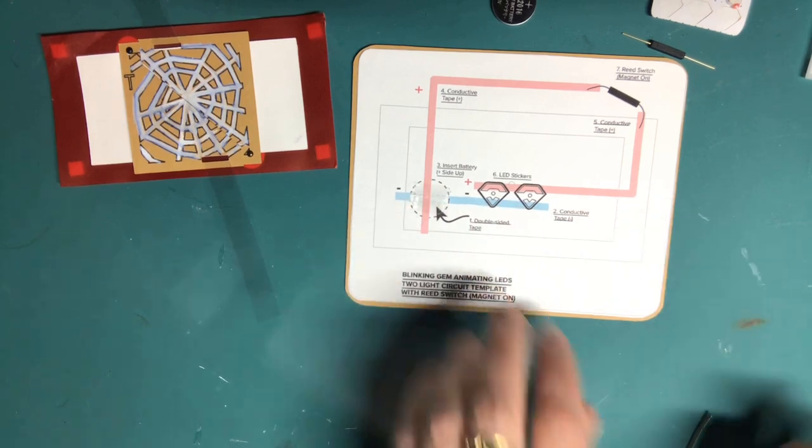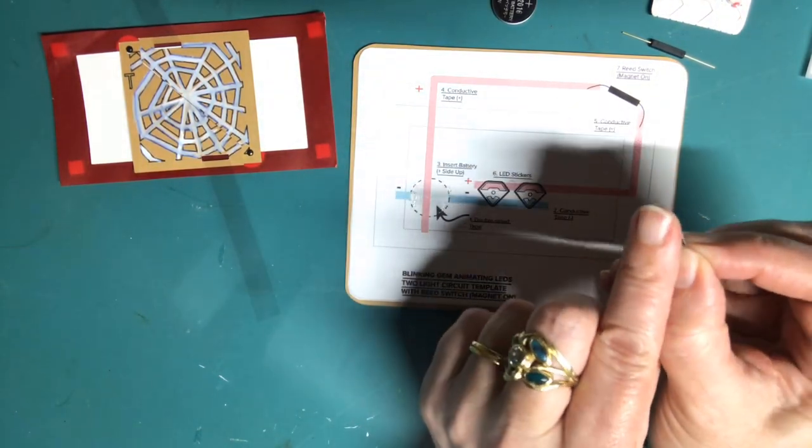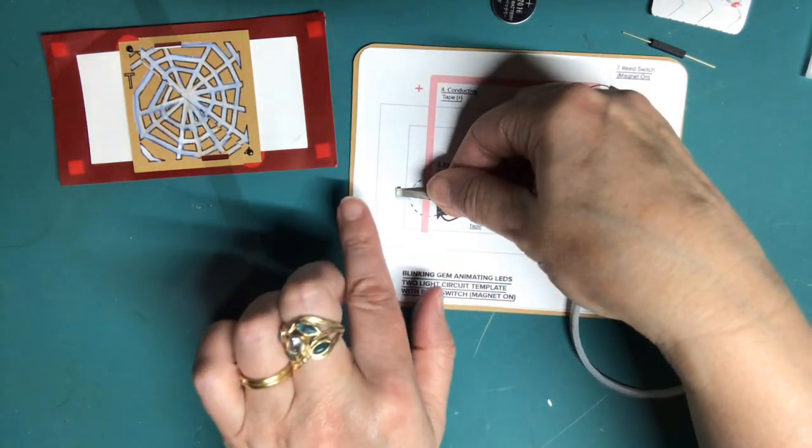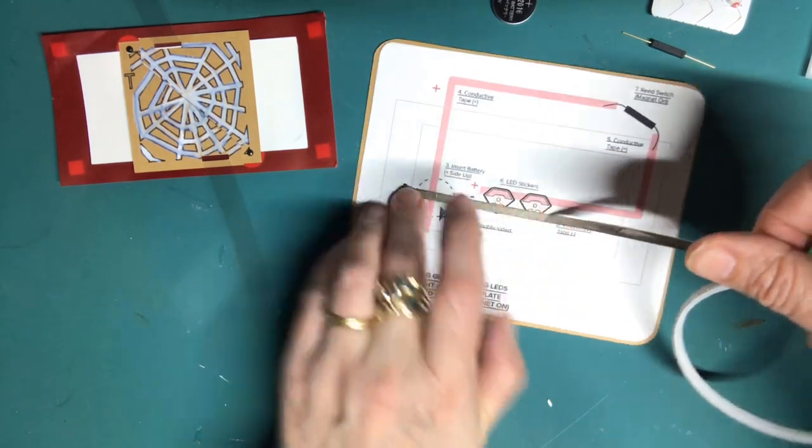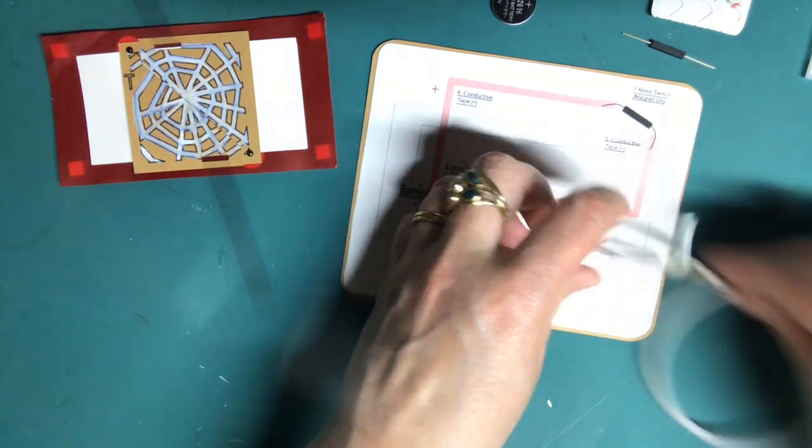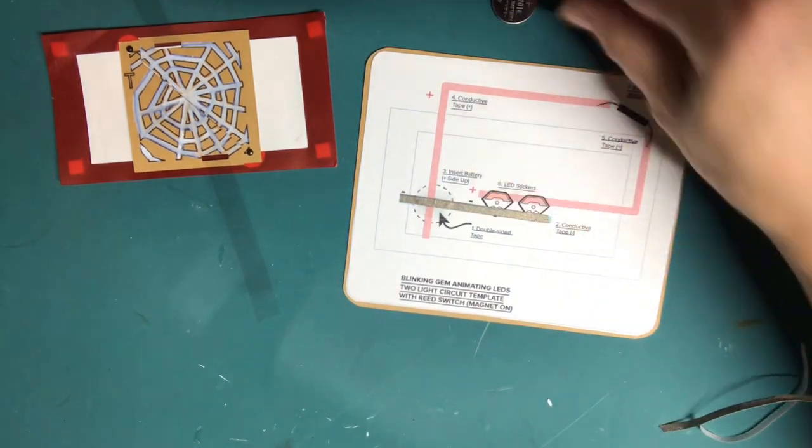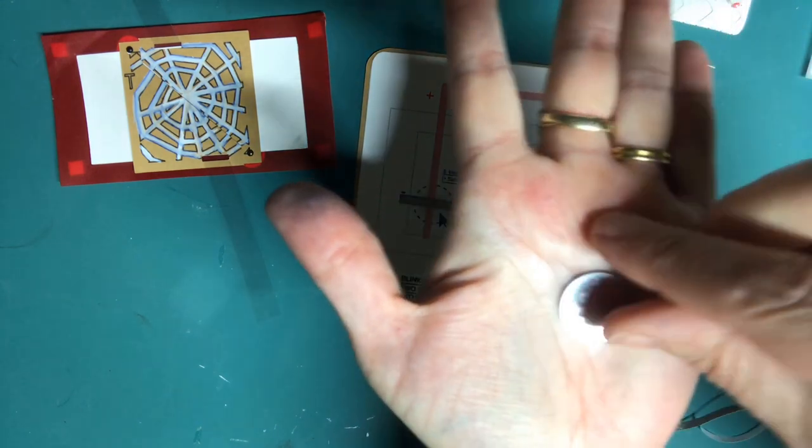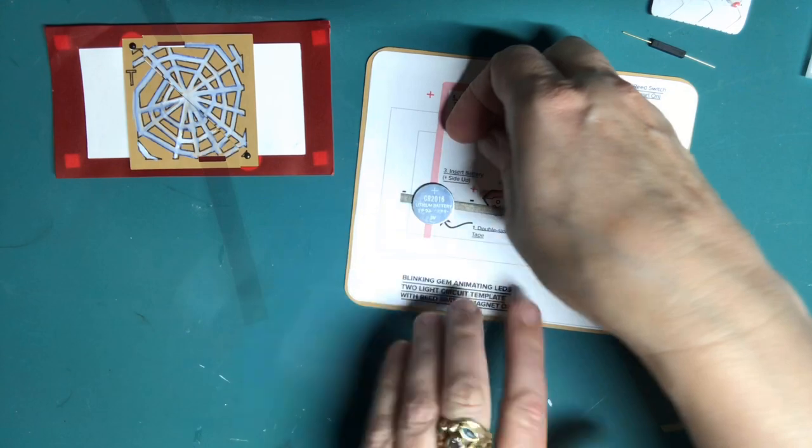Next, add a piece of conductive fabric tape over the blue line on your template, overlapping the double-sided tape. I find it helpful to use the pad of my finger to remove the conductive tape from its backing. Cut off the excess with scissors, then adhere the battery positive side up on top of the double-sided tape.